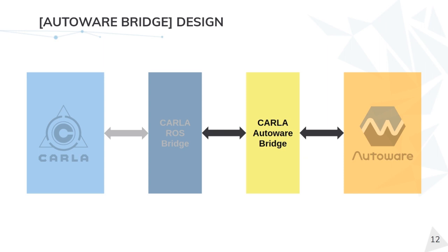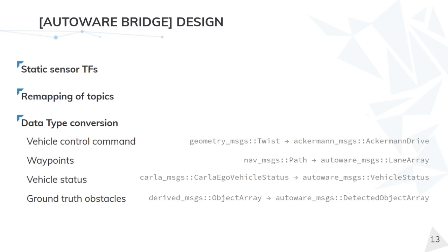Now let's look at the Autoware bridge. Its main objective is to remap topics from the Carla ROS bridge world to the Autoware world. Since Autoware also uses ROS as its communication middleware, the remapping consists of modifying the ROS topic names. Additionally, the Autoware bridge performs some data type conversions, because sometimes the message types from the Carla ROS bridge do not match exactly what Autoware expects. Dedicated nodes handle these conversions in both directions.